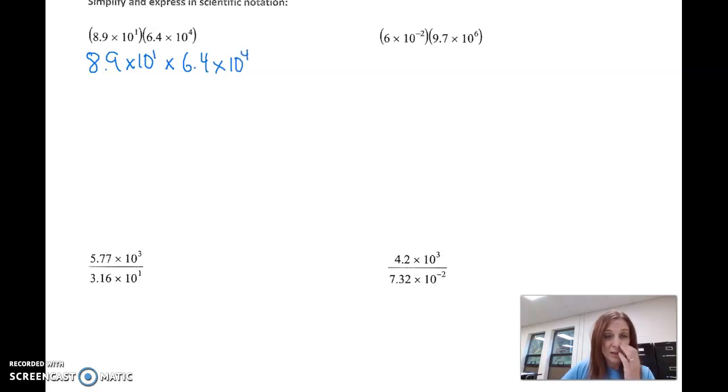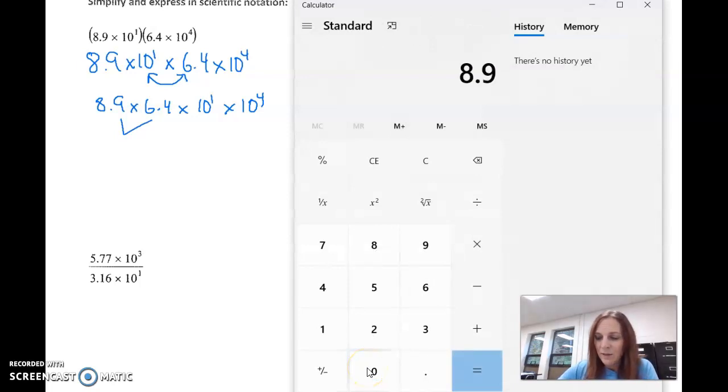So this is actually 8.9 times 10 to the first times 6.4 times 10 to the fourth. Remember, we can multiply in any order by the commutative property, so I can change these two around and have 8.9 times 6.4 times 10 to the first times 10 to the fourth. If I multiply 8.9 times 6.4, I get 56.96.